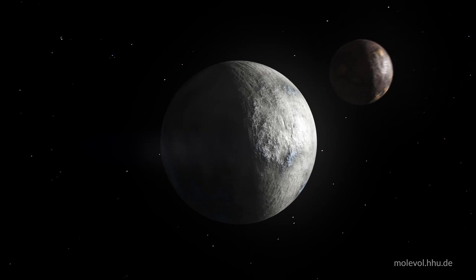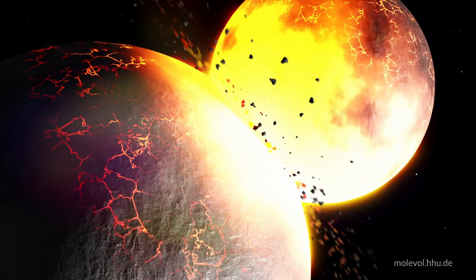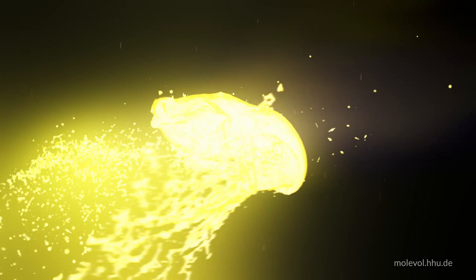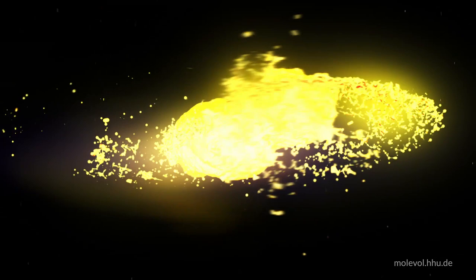4.5 billion years ago, just after the Earth formed, a Mars-sized planet collided with the Earth in what is called the Moon-forming impact. This melted the entire crust and mantle. Massive amounts of magma were cast out into space, and from that material the Moon was formed.